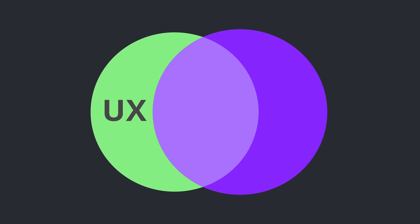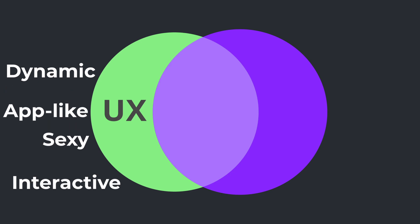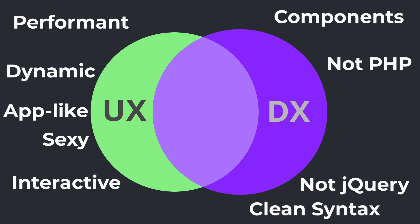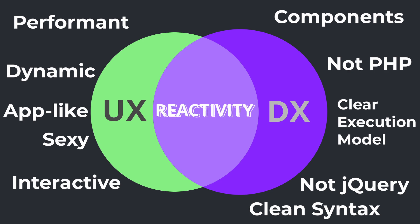When the first front-end frameworks were introduced, they solved two very important issues. They enhanced user experience by creating websites that were dynamic, highly interactive, and performed like native apps. On the other hand, they also improved developer experience, empowering developers to create such sophisticated applications. Reactivity sits at the core of these frameworks, playing a crucial role for both developer experience and user experience. It ensures that updates to the UI happen automatically, without developers needing to manually rewrite code each time.